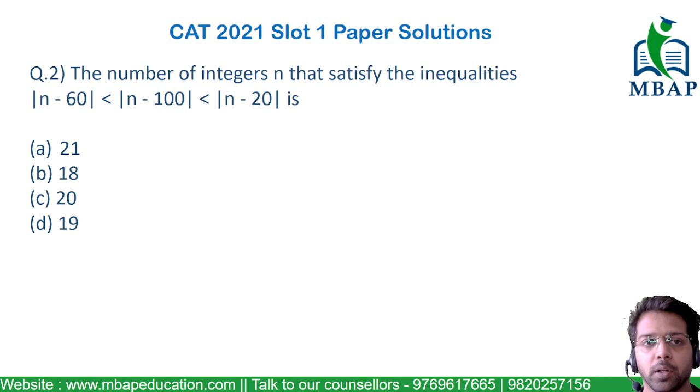Let's look at the next question. The number of integers n that satisfy the inequality |n-60| < |n-100| < |n-20|.